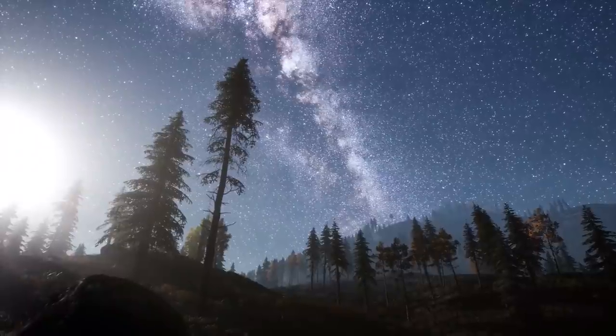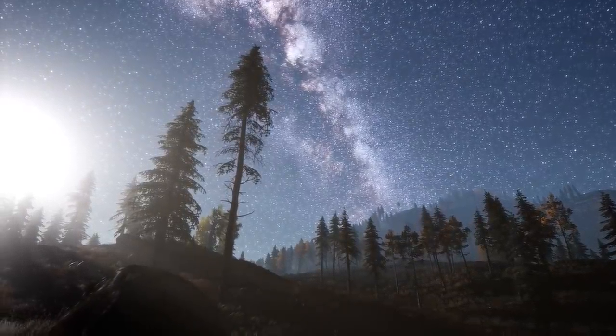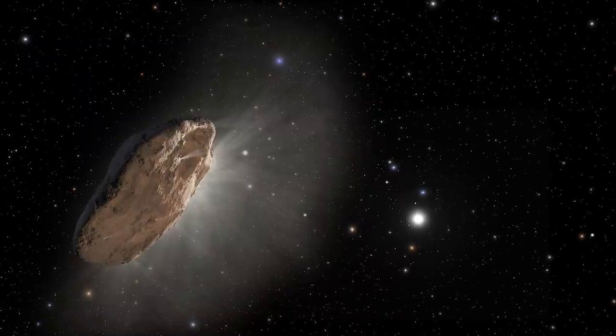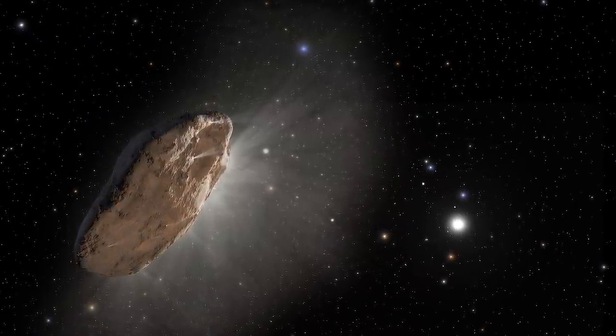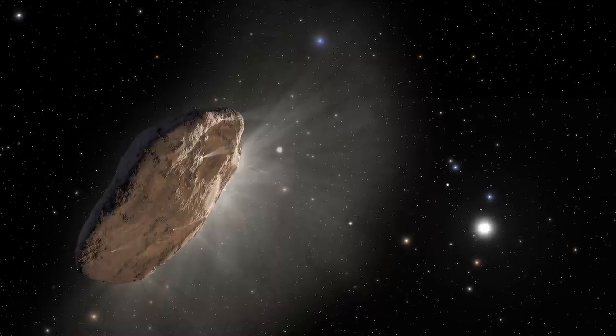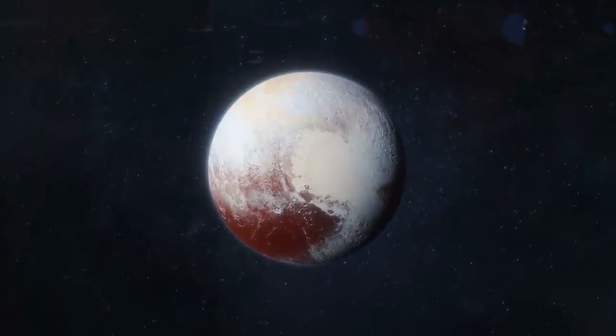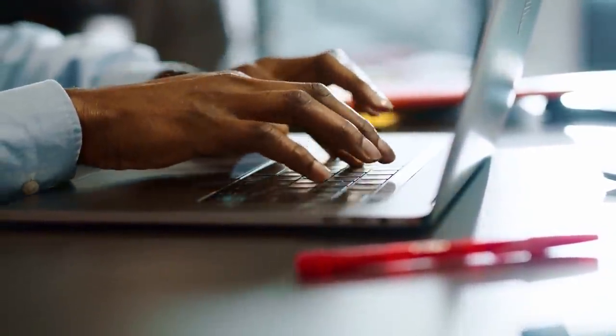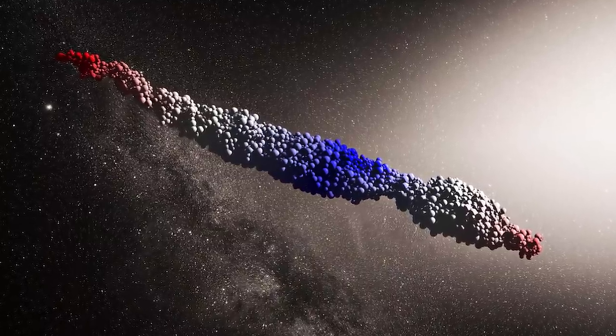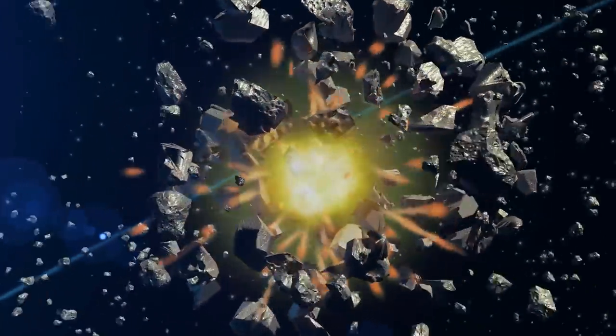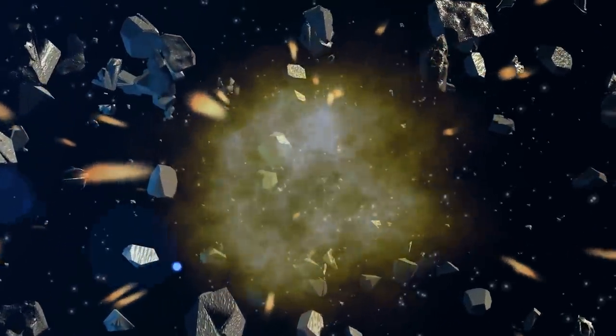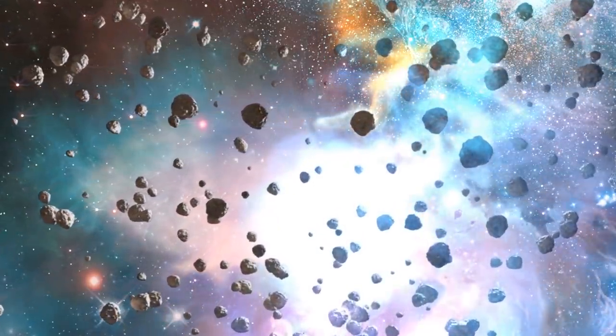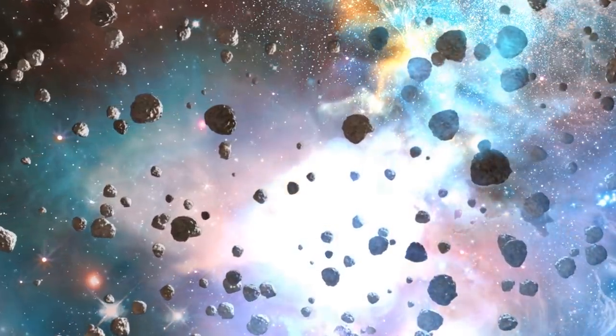But another theory has now surfaced that might explain what Oumuamua really is. It's now believed the object could be like a pancake or a giant cookie-shaped piece of debris, a piece of shrapnel from an exoplanet like Pluto. In 2021, two Arizona State researchers published a pair of papers arguing that the object could be a hydrogen iceberg. These researchers think that some space object hit the planet where Oumuamua originated from, and the violent collision sent the chunk of planet careening towards our solar system around 400 to 500 million years ago.